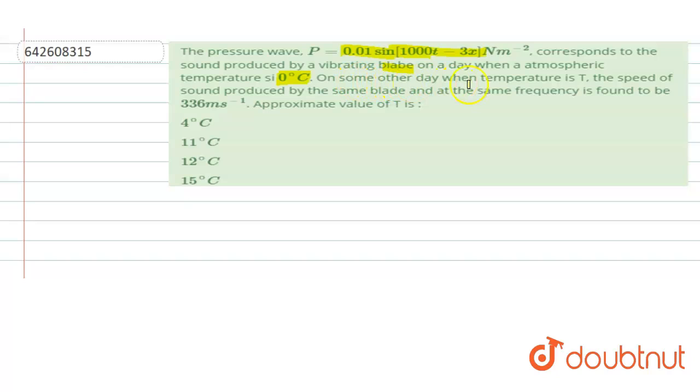On some other day when the temperature is T, the speed of sound produced by the same blade and at the same frequency is found to be 336 meter per second. So we have to find the approximate value of T.